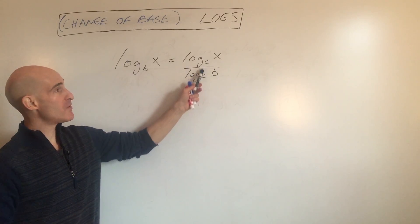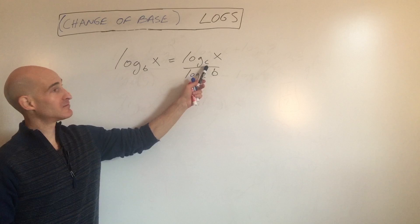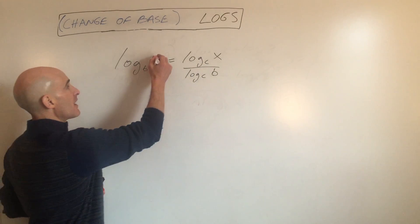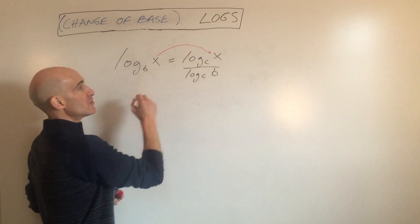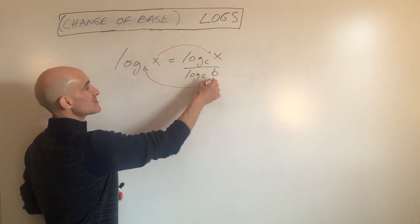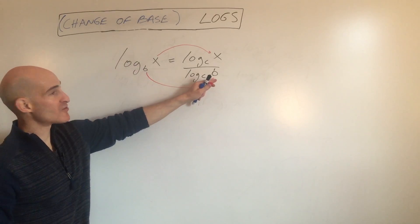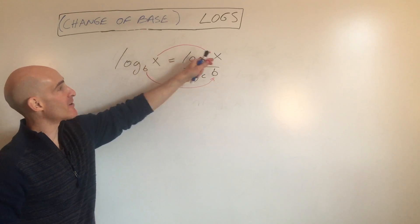What this means is you can pick a new base, base c, and what you want to remember is the x goes in the numerator and the b goes in the denominator. I always think the b is a little bit lower, so that's how you can remember it goes in the denominator. The x is a little bit higher, so it goes in the numerator.